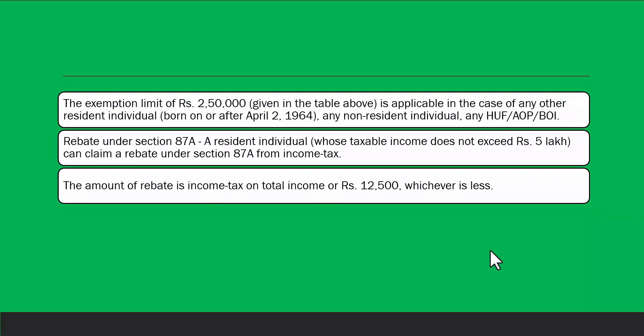A resident individual whose taxable income does not exceed Rs. 5 lakhs can claim a rebate under Section 87A. The rebate amount is the actual income tax on total income or Rs. 12,500 — whichever is less. This rebate is only available to resident individuals; non-residents are not eligible. So if your income is below 5 lakhs, you get a maximum additional rebate of Rs. 12,500.